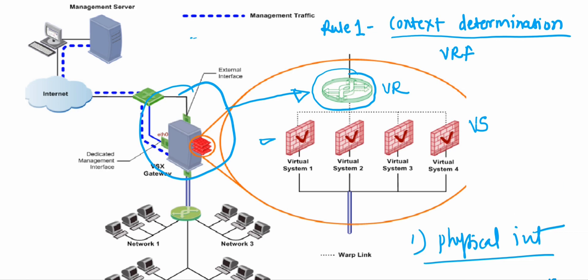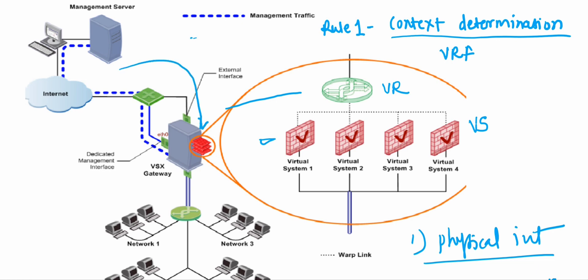Likewise, if you have only a virtual switch configured, whenever a packet comes from the outside world to the VSX gateway, based on the MAC table and MAC forwarding feature, it will forward that packet to the respective destination — whether it's an internal network or a virtual system. Context determination happens here at the VSX gateway. This is rule one.